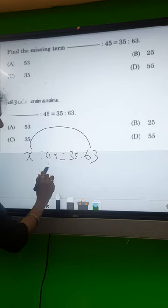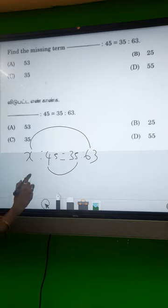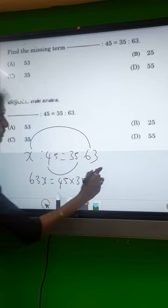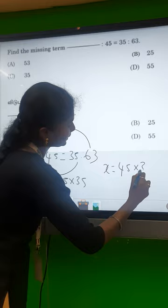Let's multiply the last number in the center. 63x equals 45 times 35. So x equals 45 times 35 divided by 63.